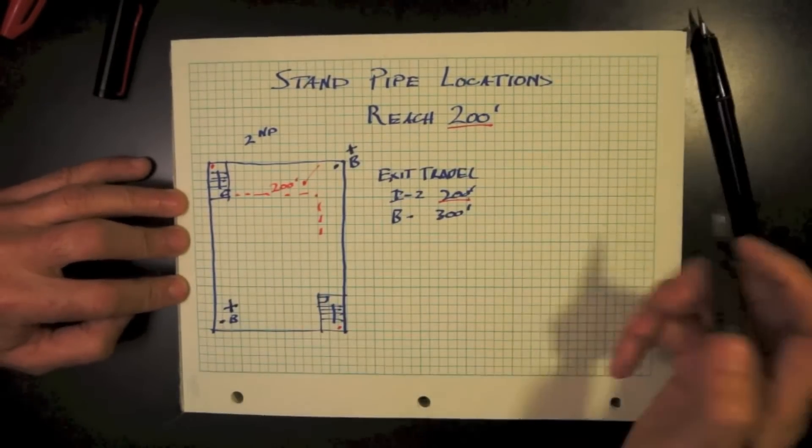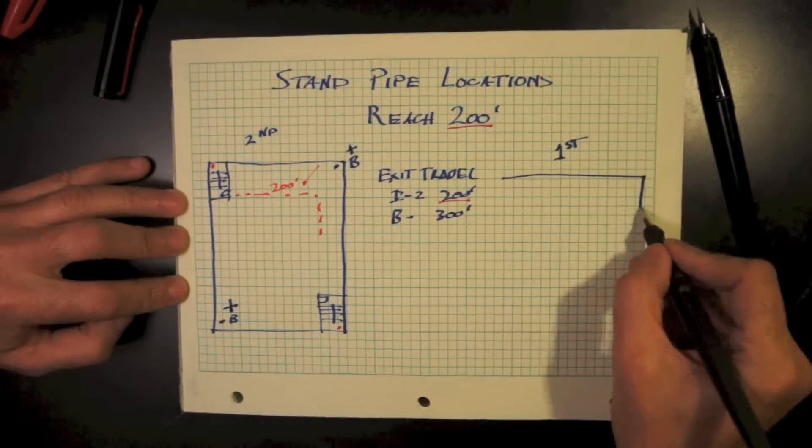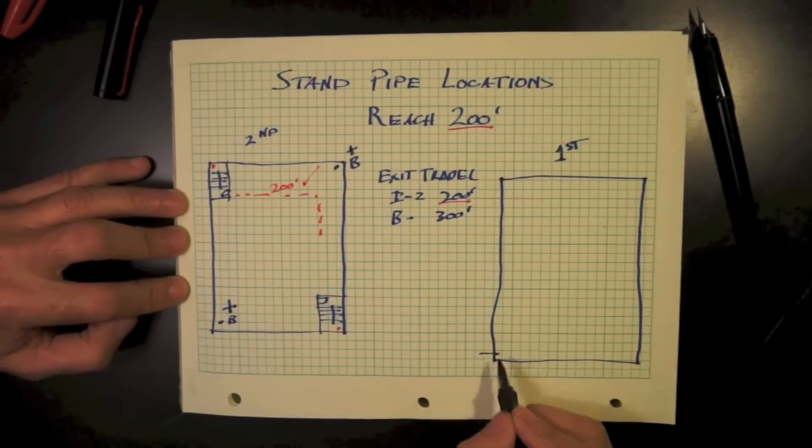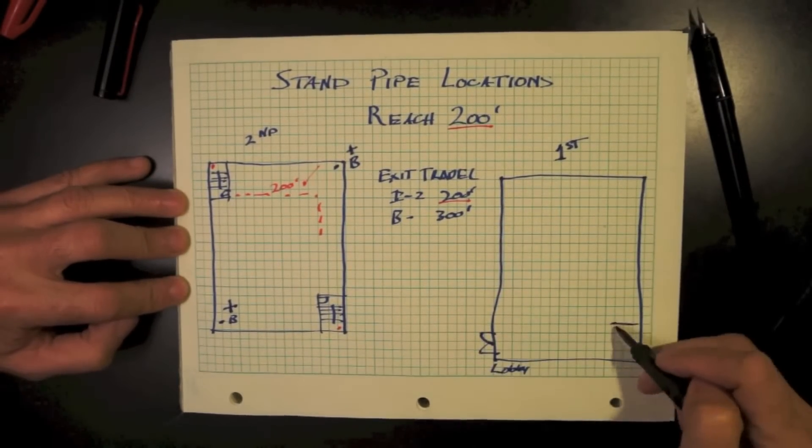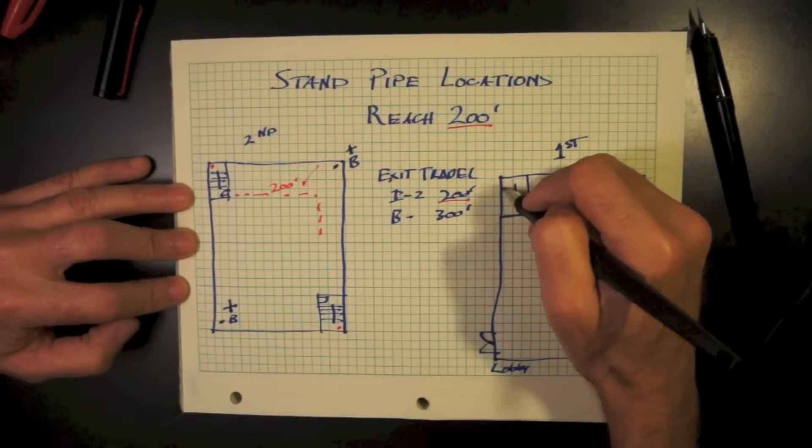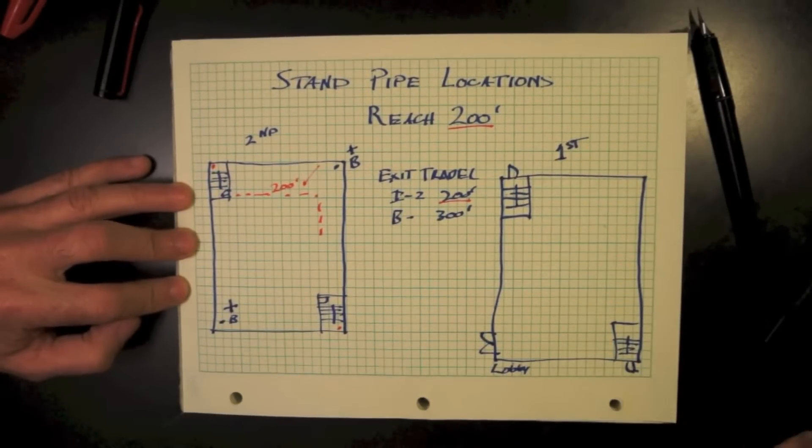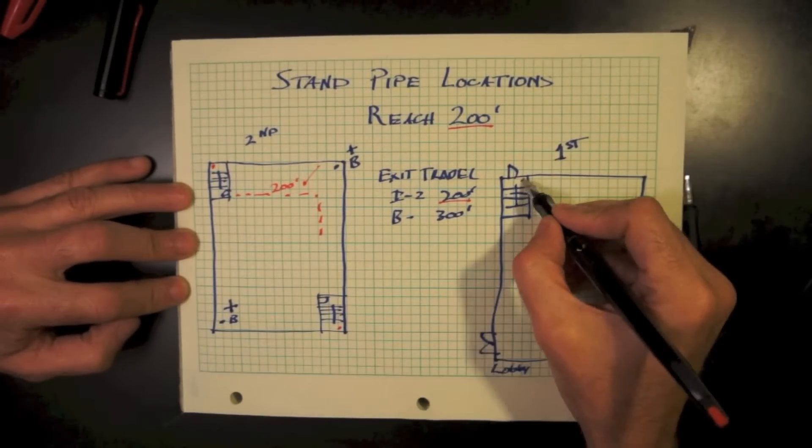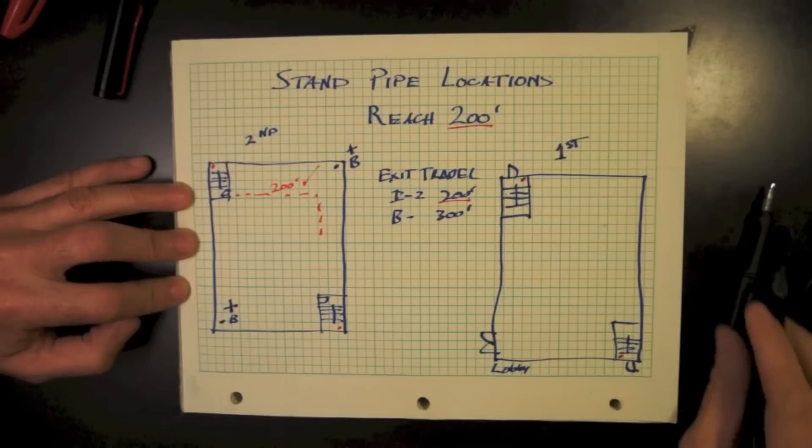Now let's take this to the first floor. We'll draw a lobby and two stairs. Some of this is not unique to healthcare. Our stairs will have an exit out, but not necessarily will we have access from that floor to the stair.